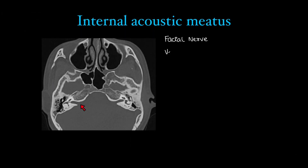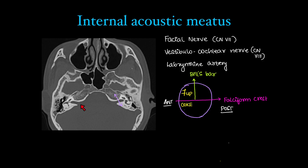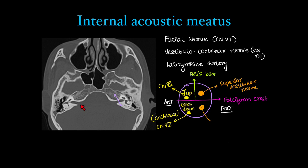The facial nerve (CN VII) and vestibulocochlear nerve (CN VIII) pass through the internal acoustic canal, along with the labyrinthine artery. The cross-section of the internal auditory canal is divided horizontally by the falciform crest, and the superior portion is divided into anterior and posterior by Bill's bar. The mnemonic is 'seven up and Coke down': the seventh (facial) nerve passes superiorly, the cochlear nerve passes inferiorly, and the vestibular nerve — with superior and inferior vestibular divisions — passes in the remaining compartments.